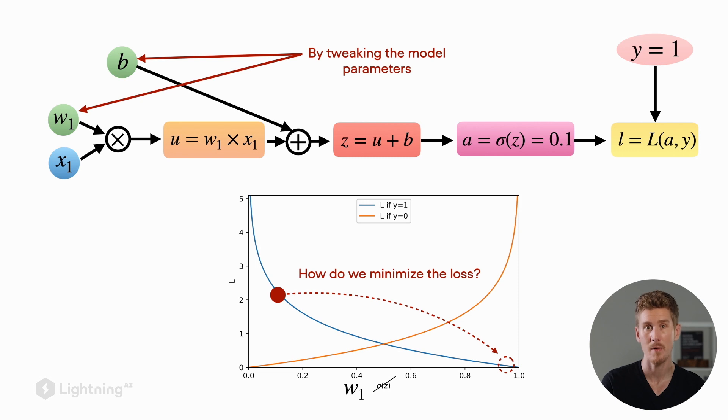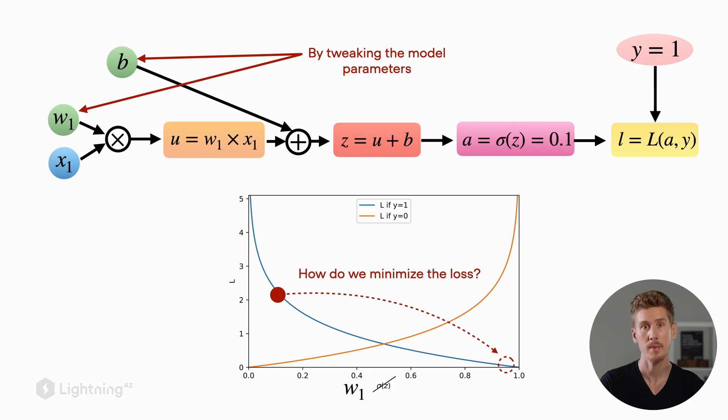x1 is given to us by our data and just for this example assume the bias unit b is fixed. So here we are only changing w1 for illustration purposes and see how it affects the loss function. Our goal really is to minimize the loss. In order to minimize the loss we have to move it to the right hand side here.